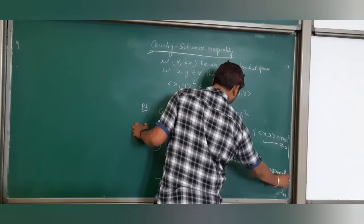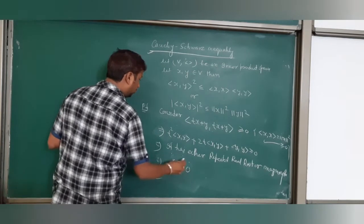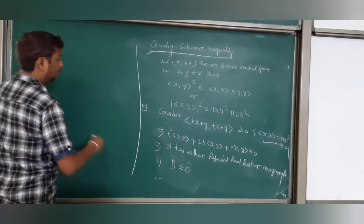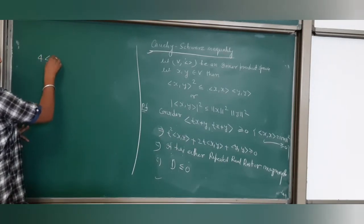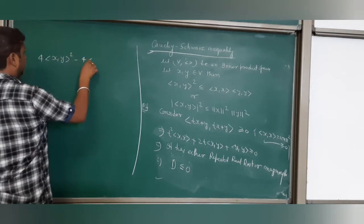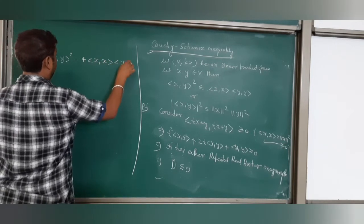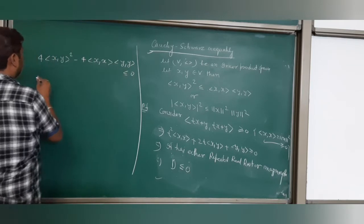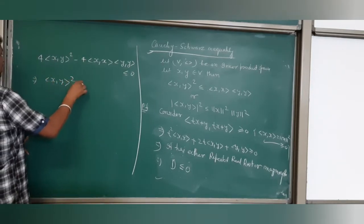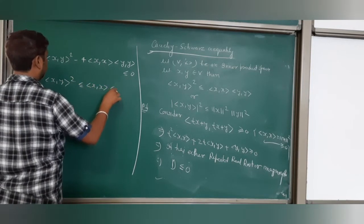This implies the discriminant must be less than or equal to 0. What is discriminant? b squared minus 4ac. What is b squared? 4 times inner product x, y squared minus 4a equals inner product x, x, c means inner product y, y. It is less than or equal to 0. So it means inner product x, y squared is less than or equal to inner product x, x times inner product y, y.